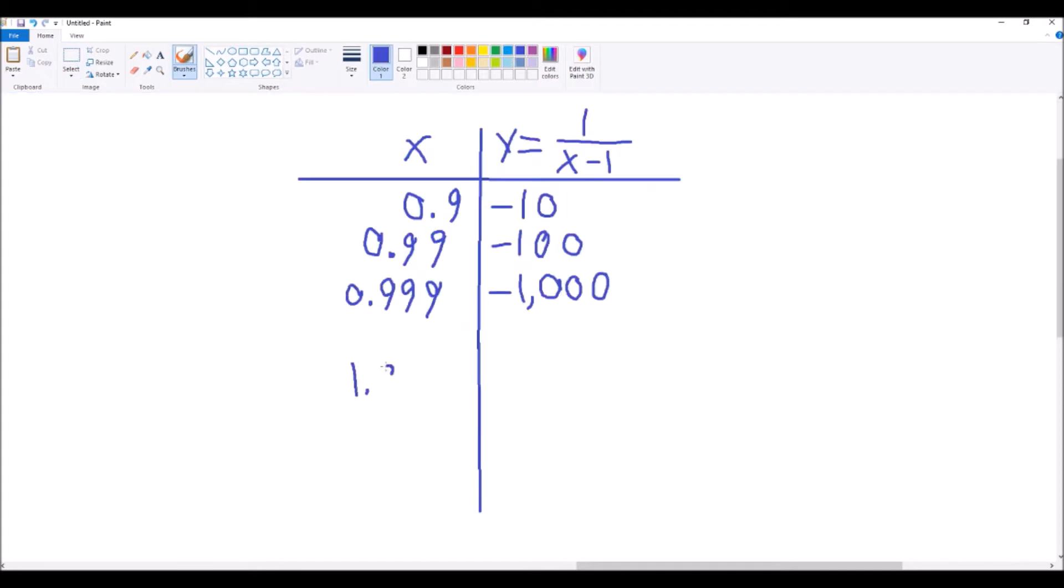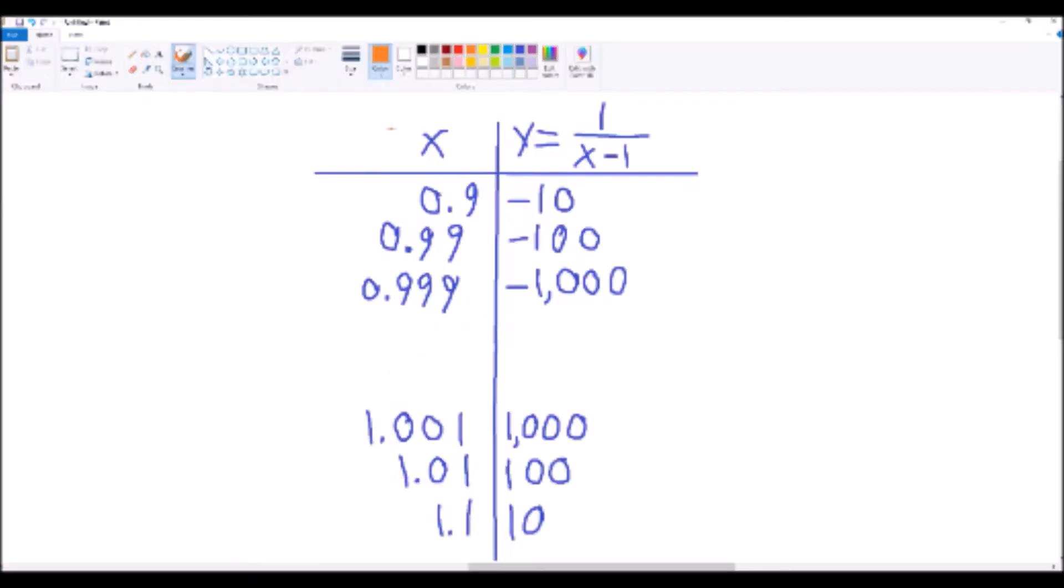Let's see what happens when x gets closer to 1. Well, that's interesting. As x approaches 1, y gets absolutely enormous. But we can clearly see that it does matter which direction we're approaching x equals 1.